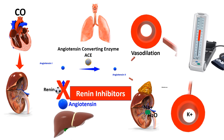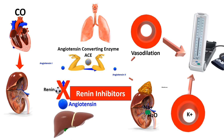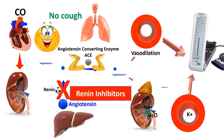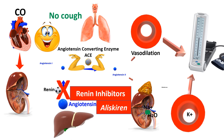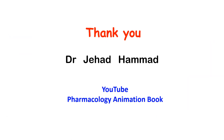As with previous drug groups, vasodilation and decreased blood volume will decrease elevated blood pressure. Like angiotensin receptor blockers, renin inhibitors do not interfere with angiotensin converting enzyme activities. Therefore, cough is not a common side effect of renin inhibitors. There is only a single drug in this group, which is aliskiren.